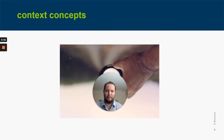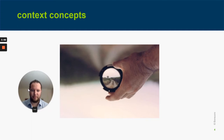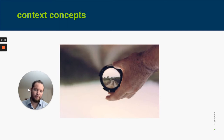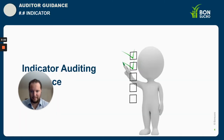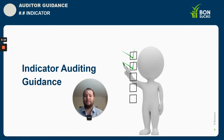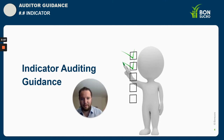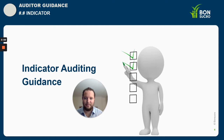Some indicators need context concepts to better understand certain points — like living wages, social dialogue, or risk assessment — so we will have additional slides for those. At the end, we have the Indicator Auditing Guidance: a summary covering first the BornSucre Production Standard, second the Implementation Guidance on how to implement concepts, and third the Auditor Guidance on how to audit each indicator. This is the end of the structure for each indicator in the training material.